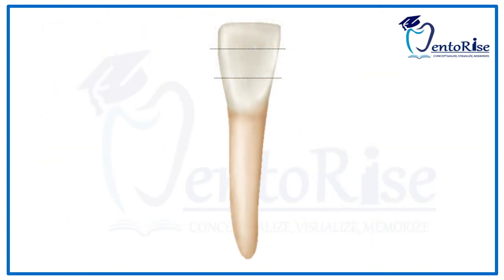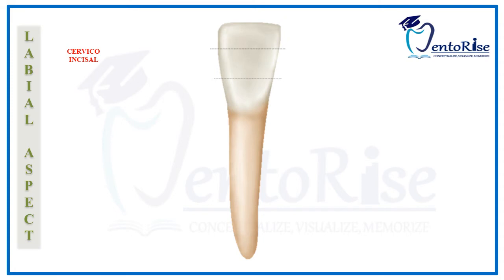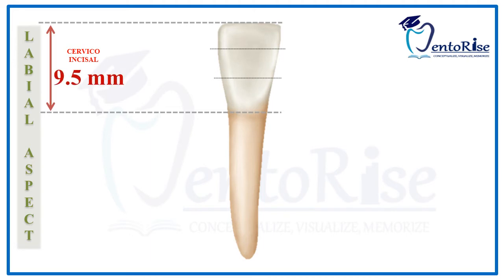Starting with the labial aspect, considering the first heading — dimensions. The cervical-incisal length, as measured from the highest point on the incisal rest to the lowest point of the cervical line, is 9.5 mm. The root length, as measured from the lowest point on the cervical line to the root apex, is 14 mm.